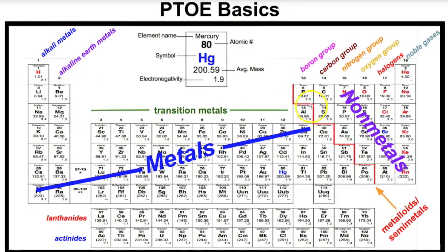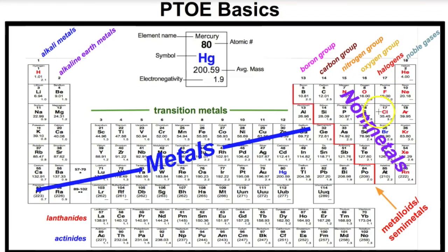There's a zigzag line on the periodic table called the metal-nonmetal border, sometimes called the zental border. Everything to the left of this stair step line — with the exception of hydrogen — is going to be a metal. Everything to the right of the stair step line is going to be a non-metal. So you can see that most of the elements are in fact metals.